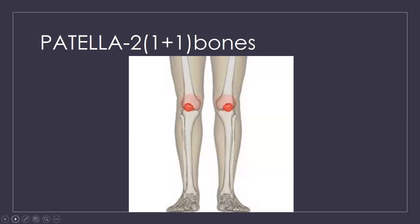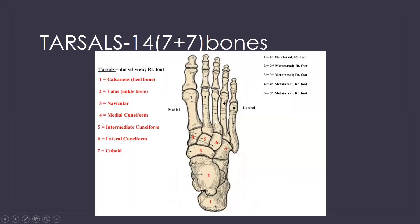Next are the tarsals. You have seven tarsal bones in each foot — one, two, three, four, five, six, seven. Seven on each side, so seven plus seven equals 14 tarsal bones in total. You will find these in your feet.